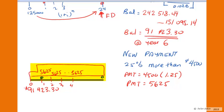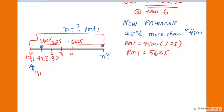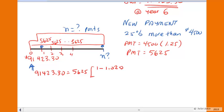We wrap an annuity bus around that and the question is: how many quarterly payments are required if you increase the payment size to $5,625? We choose a focal date of today and say that the present value — $91,423.30 — is equal to the payment size of $5,625 per quarter multiplied by the present value annuity factor: (1 - 1.028^(-n)) divided by 0.028 per quarter. The first step is to divide $91,423.30 by $5,625, which gives 16.253. That equals (1 - 1.028^(-n)) divided by 0.028.